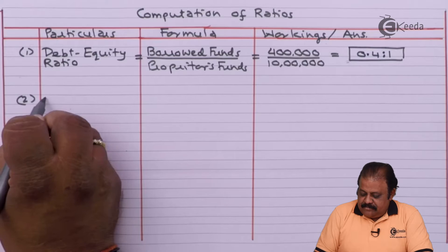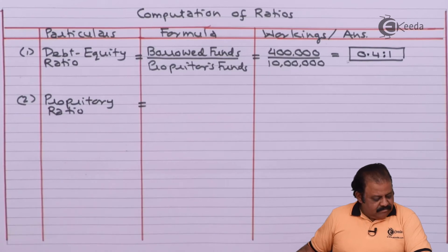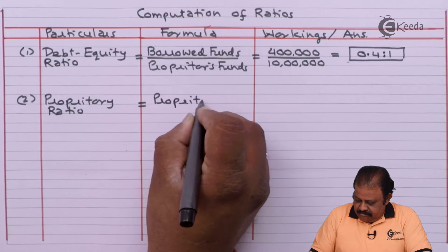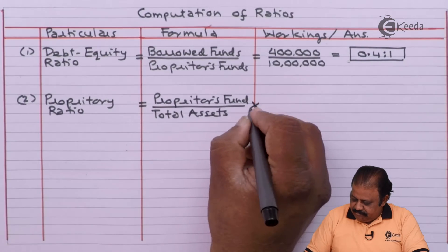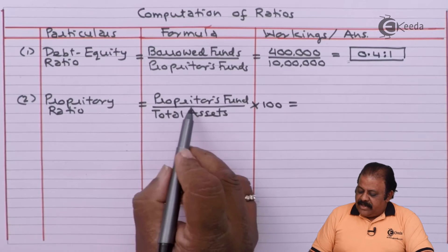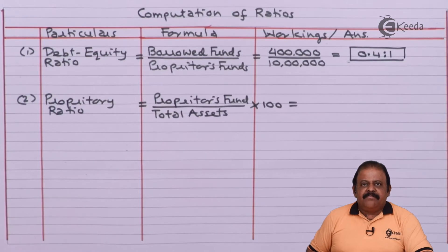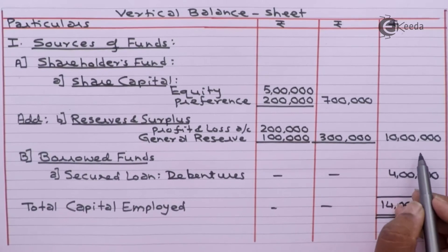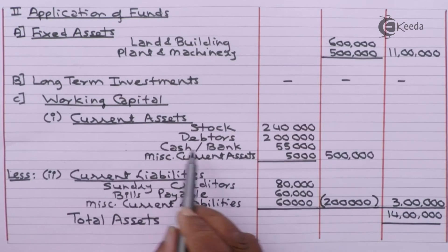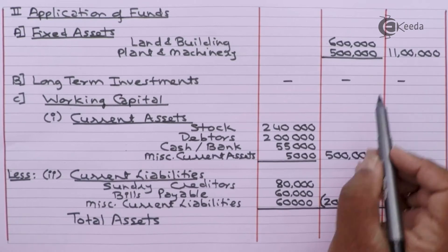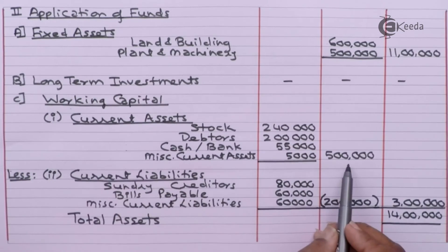After debt equity ratio, we calculate the proprietary ratio. Formula: proprietors' fund divided by total assets, multiplied by 100. Shareholders' fund (proprietors' fund) is 10 lakhs. Total assets = fixed assets 11 lakhs plus current assets 5 lakhs = 16 lakhs. So proprietary ratio is 10 divided by 16, multiplied by 100, which comes to 62.5%.